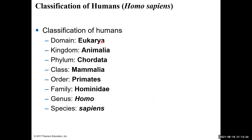These are the remaining classification levels. We've talked about domain and the four kingdoms. After kingdoms we have: phylum, class, order, family, genus, and species. Every organism in the world falls under a specific group in every one of these classification hierarchies.